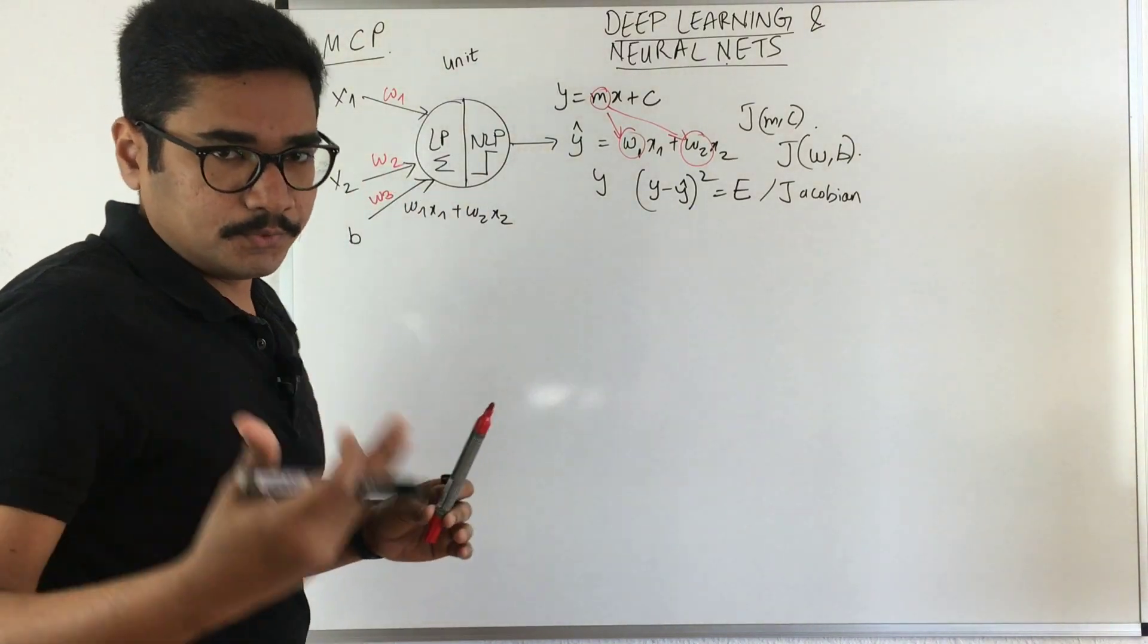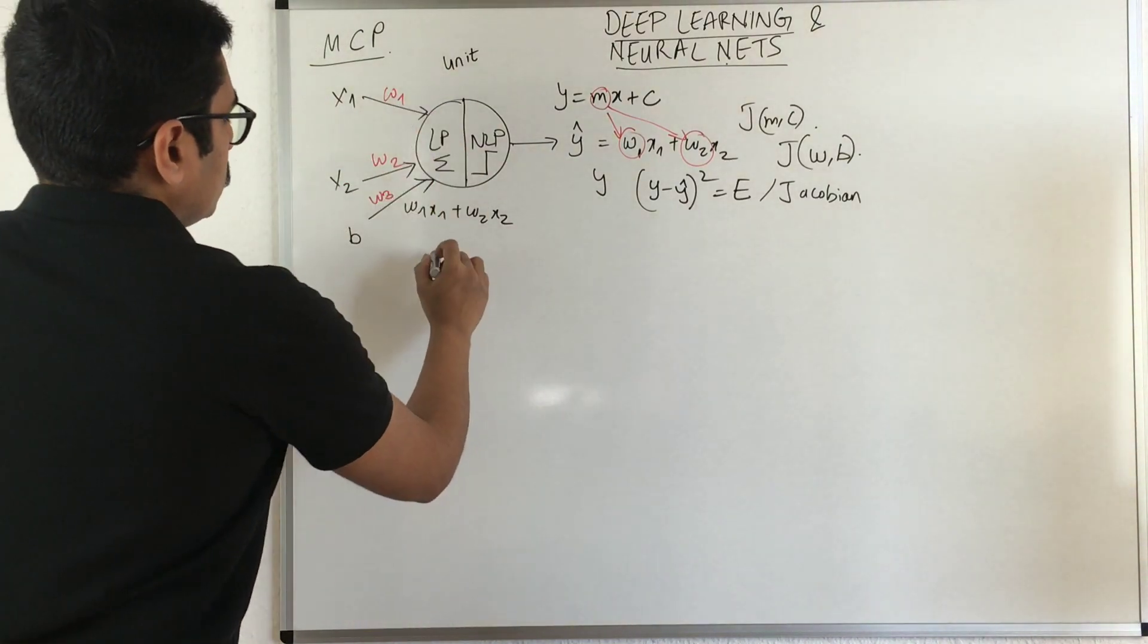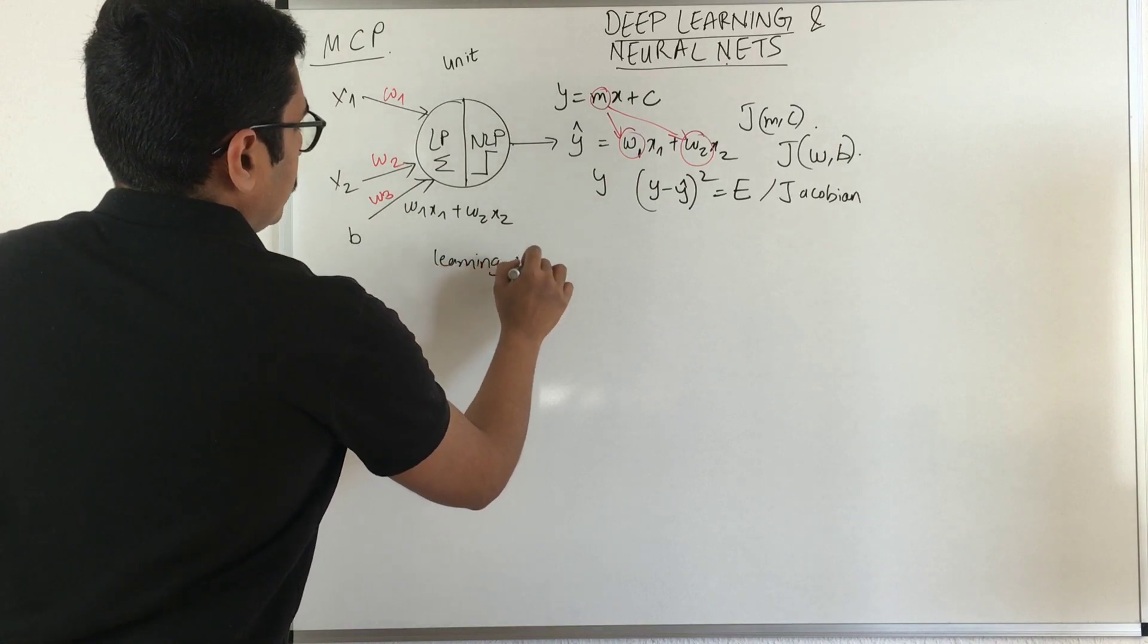What we do is we're changing the weights. Essentially, whenever we're constructing a neuron or neural networks, we are learning weights.